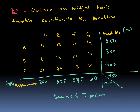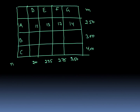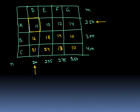Since it is balanced, we can directly go to the next steps. In the North West Corner method, you start from the north west corner of the matrix. The north west corner is at row 1, column 1. Check the row supply (250) and column demand (200); the minimum is 200, so allocate 200 here. Subtract: 250 minus 200 leaves 50 for row 1. Column 1 demand is satisfied, so cross it out.